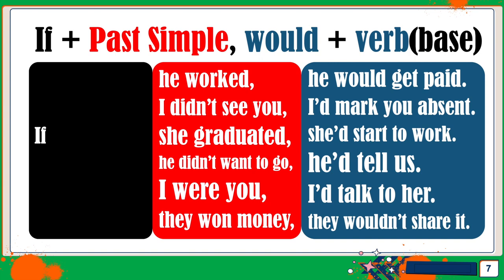So notice the second example — I used the contracted form of WOULD, that is apostrophe D: I'd, she'd, he'd. And then I used 'wouldn't' instead of 'WOULD NOT.' Let me tell you that the contracted forms are used when we speak. When we write, we want you to use the long version — so WOULD NOT, or I WOULD, like I did in the first example.